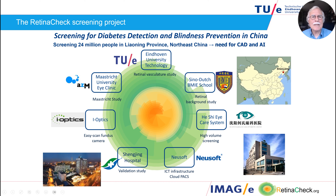So we started the project called the RetinaCheck Screening Project. We had many partners that participated. Eindhoven University was developing the software. We had a sister school in Shenyang — the capital of Liaoning province in the upper north of China. Gushye Eye Care System was our ophthalmological partner with a large series of ophthalmology hospitals. We had NuSoft, a medical imaging company in China. We did our clinical evaluation in the largest hospital in Shenyang, with 3,000 beds.